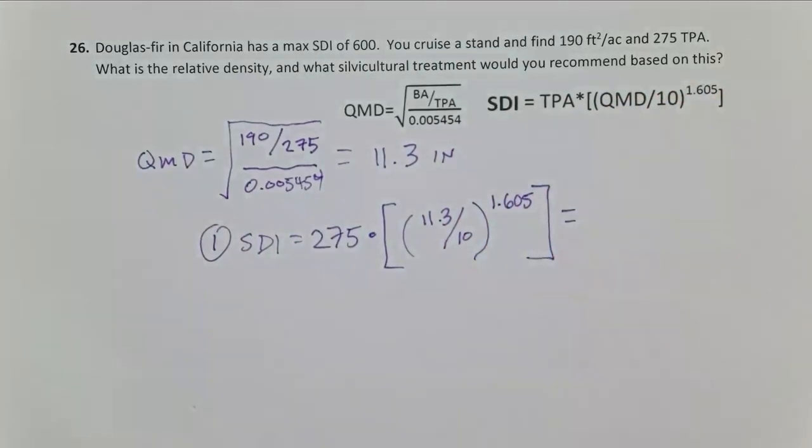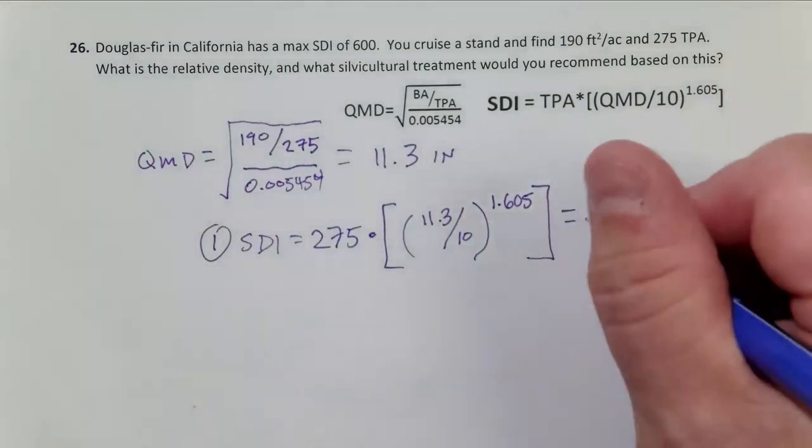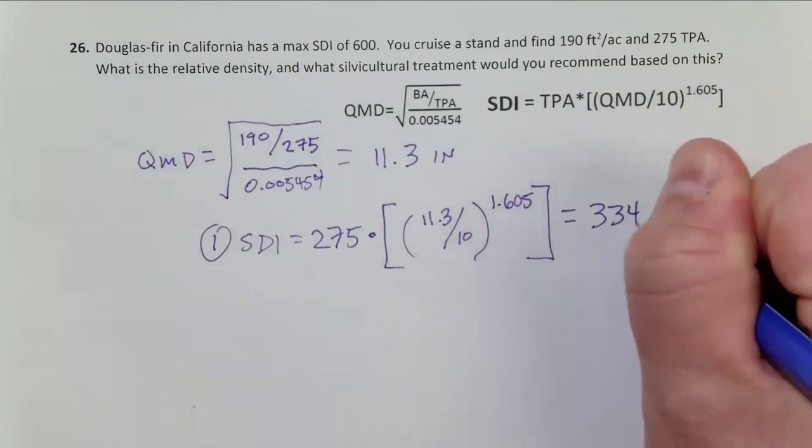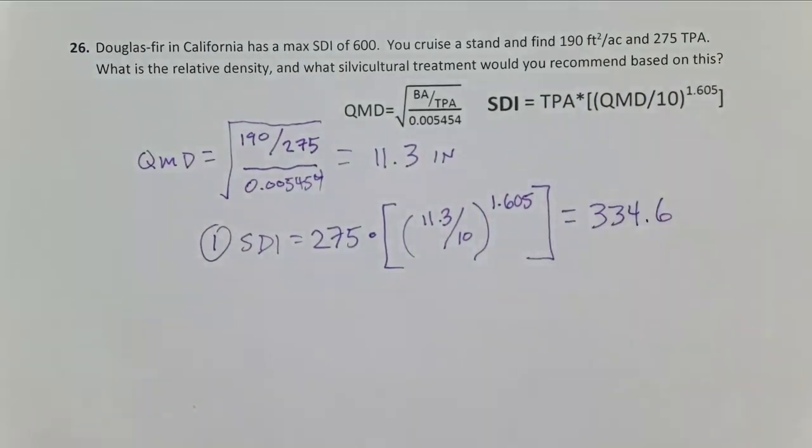And if we plug that in, SDI is going to equal 334.6, which is 10-inch trees per acre. Step two,